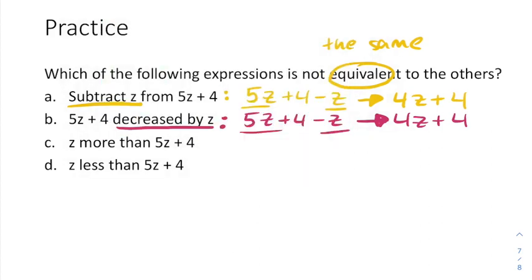Let's move on to the next option. Z more than. More than means addition. So z more than 5z plus four. That would be 5z plus four plus another z. One more z. Well, that's not the same. That's 6z plus four when I take my 5z and z together.